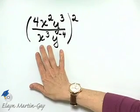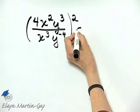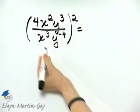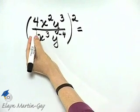Let's simplify this exponential expression and it's up to you. You can simplify within the parentheses first or you can square each factor. I'll begin by squaring each factor.